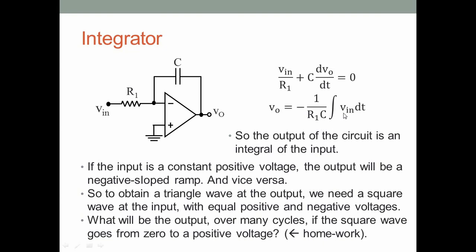If V_in is constant and positive, integrating gives a ramp in time, so we get a negative-going ramp at the output. Similarly, if the input is negative DC, the output will be a positive-going ramp. So if we want a triangle wave output, we should apply a square wave at the input with equal positive and negative voltages. When the input is positive and constant the output ramps down; when negative and constant, the output ramps up — giving a triangle wave.